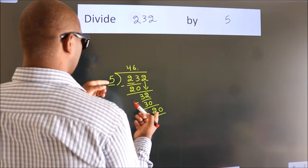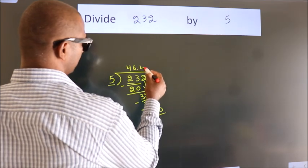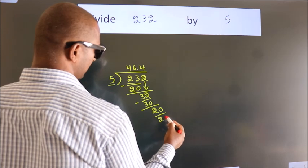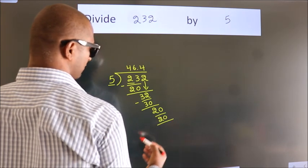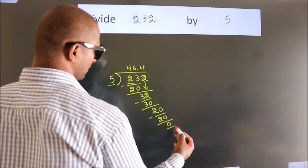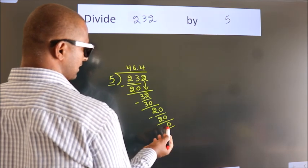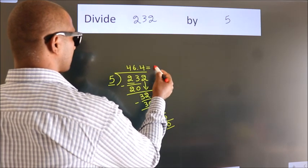When do we get 20 in the 5 table? 5 fours, 20. Now we subtract, we get 0. We got remainder 0, so this is our quotient.